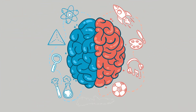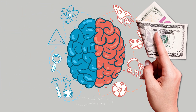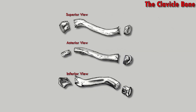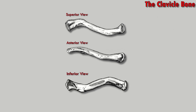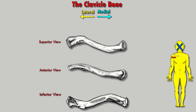Now you're a bit smarter — that'll be five bucks for your degree. How about we divide this bone up into three sections instead. On the left side of the bone we're looking at the lateral end, known as the acromial end, and on the right side we have the medial end, known as the sternal end. The sternal end connects to the sternum, and the acromial end connects to the acromion of the scapula.